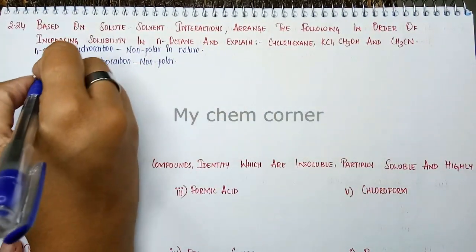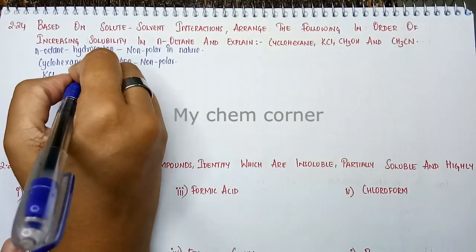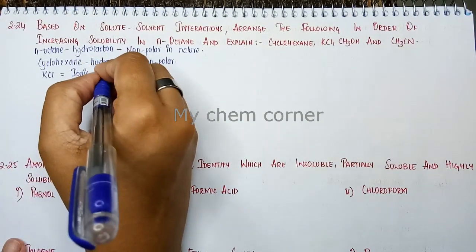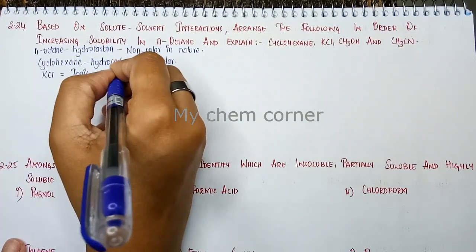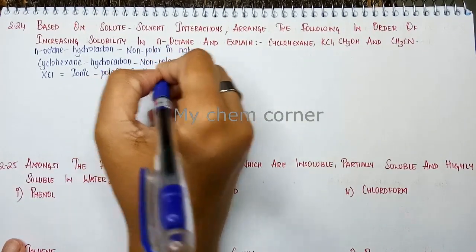When you look at KCl, it's a proper ionic compound with K+ and Cl- ions. They are ionic and will have the highest polarity in this case.